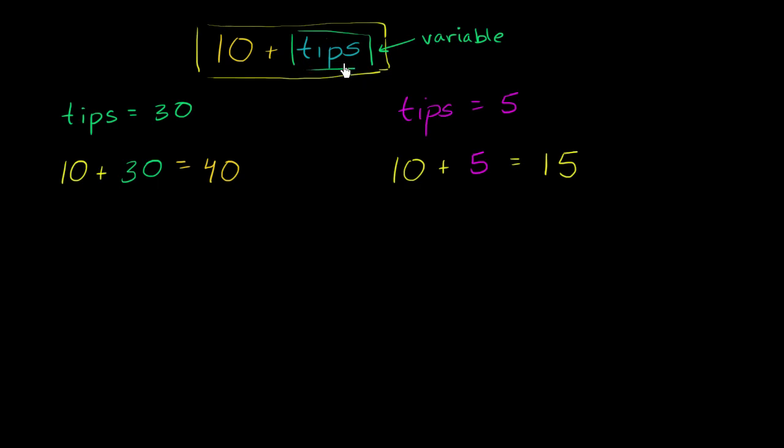You won't see whole words typically used in algebra as variables. We get lazy, and so instead we tend to use just easier to write symbols. And so in this context, instead of writing tips, maybe we could have just written 10 plus t, where t represents the tips that we get in an hour.